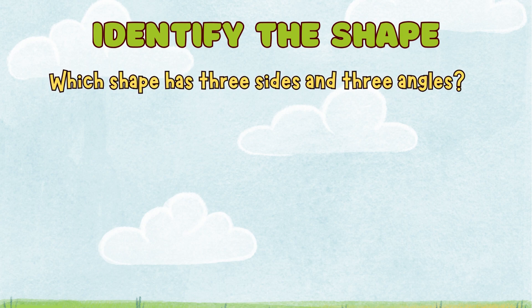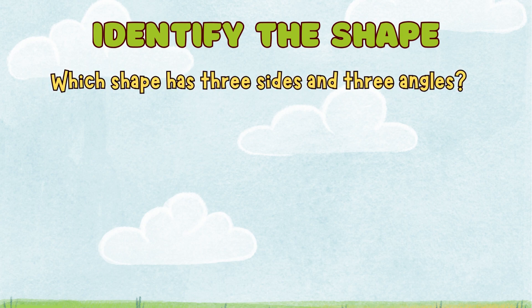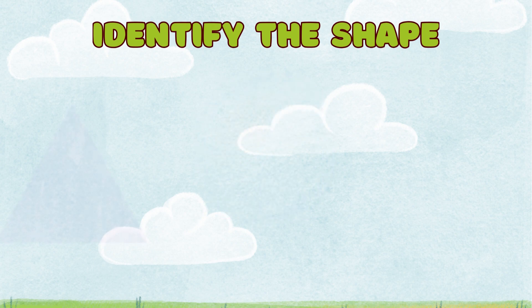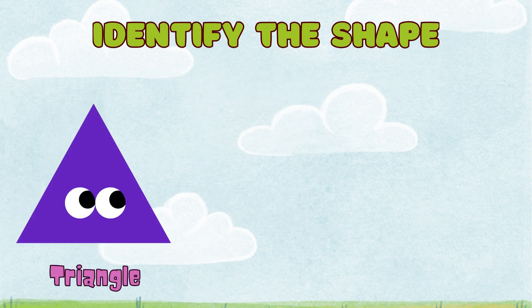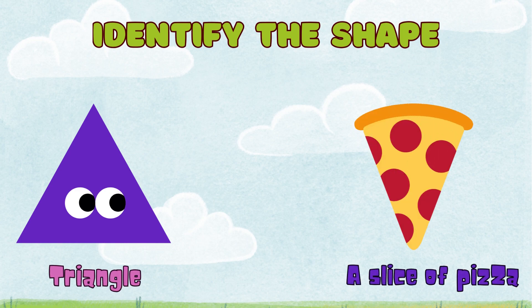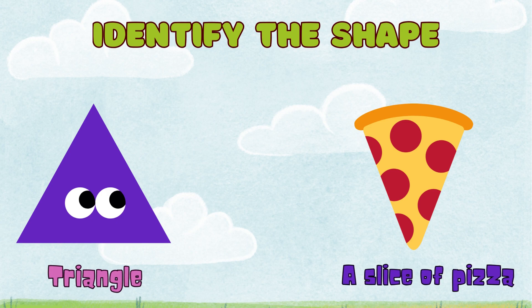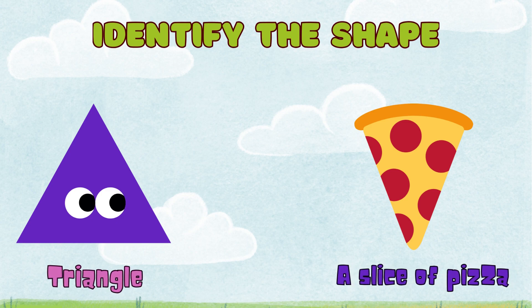Which shape has 3 sides and 3 angles? The answer is triangle. A triangle has 3 sides and 3 angles. The shape of a slice of pizza is a triangle.